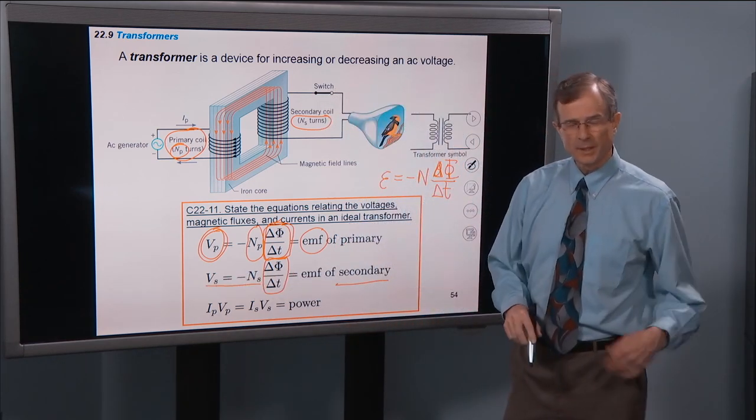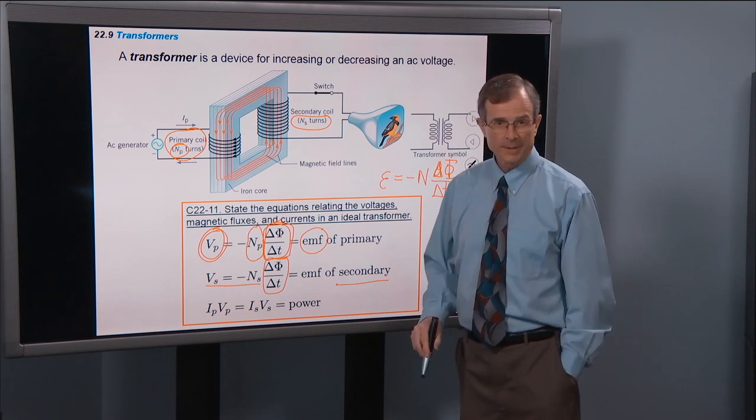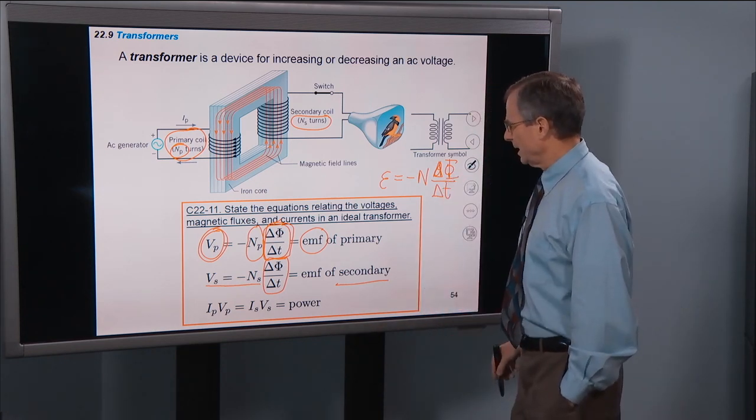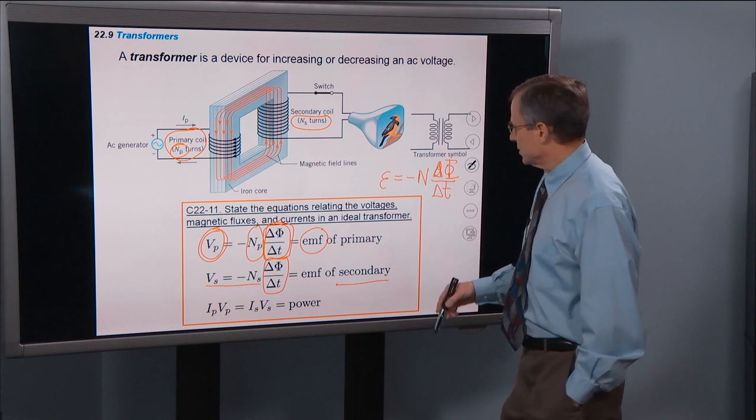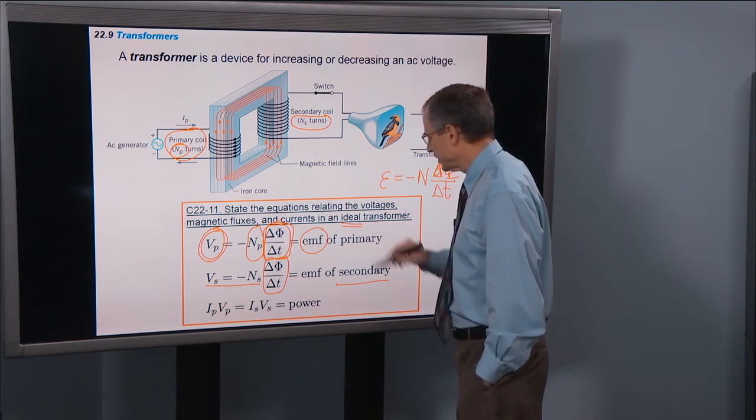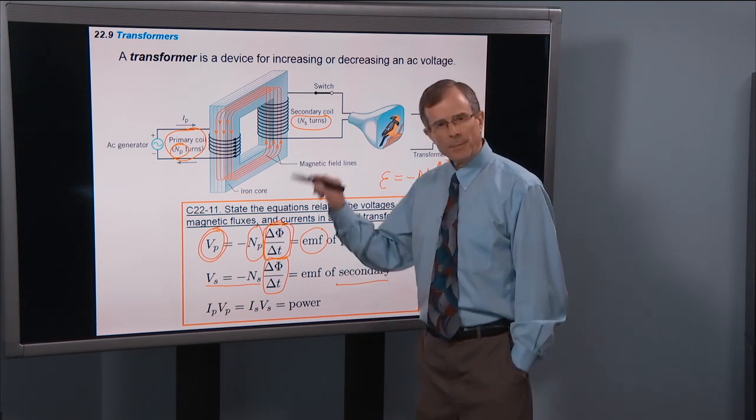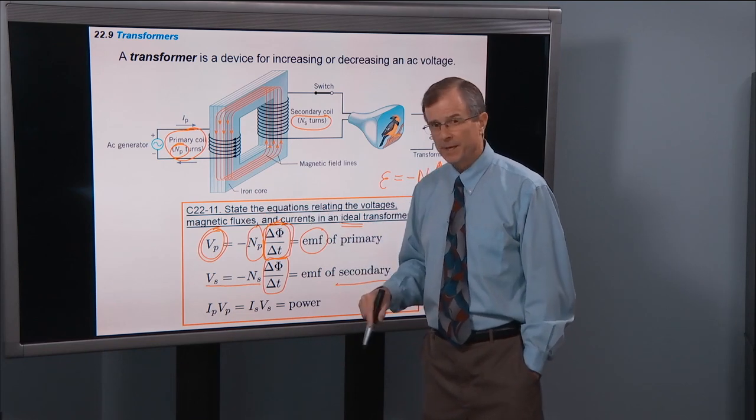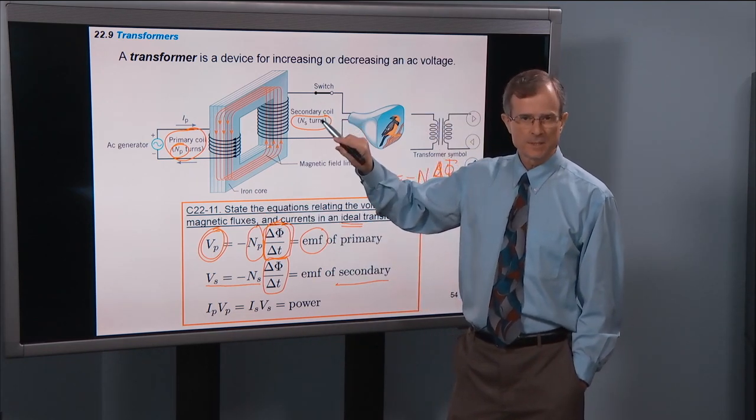except we're denoting a subscript S for the secondary coil. And then we'll also assume, for an ideal transformer, that all of the power in the primary reappears in the secondary.